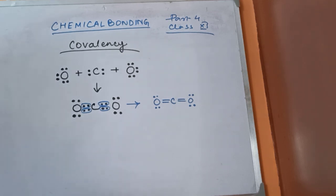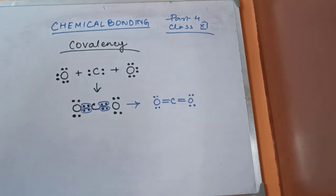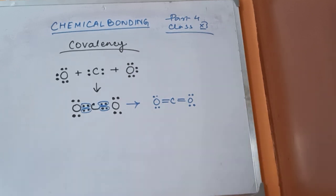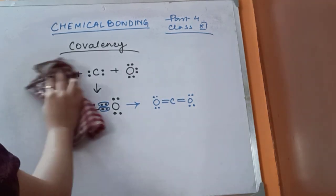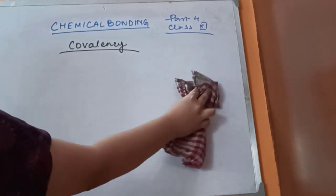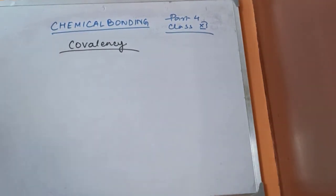So like this, we've learned till class 10 how structures are formed — this is the Lewis structure. Now I will come to the important part, which is calculation of formal charge: how formal charge is calculated and what is formal charge.